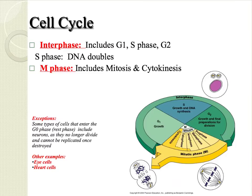Pretty much all of your cells go through the cell cycle. The cell cycle can be divided into two stages: interphase, which includes G1, S phase, and G2, and M phase. M phase includes mitosis and cytokinesis. Remember, the S phase is where DNA gets doubled or replicated.